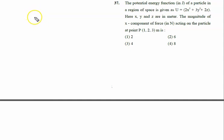The potential energy of a particle in a region of space is given by U equals 2x squared plus 3y cubed plus 2z, where x, y, and z are in meters.